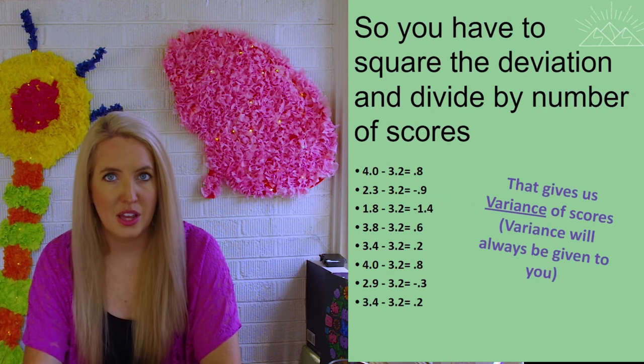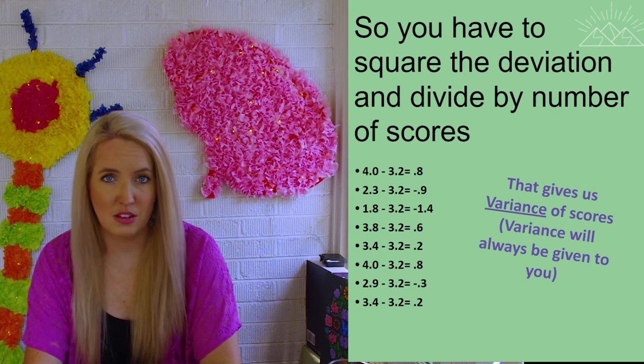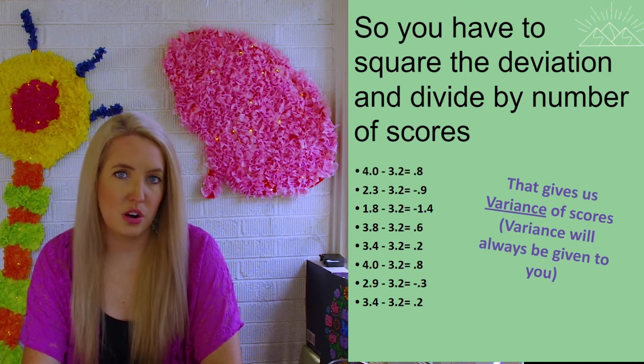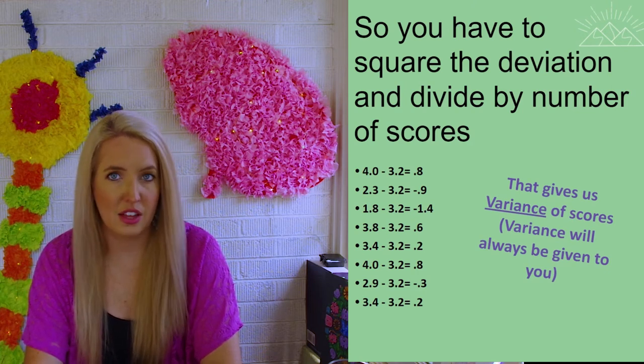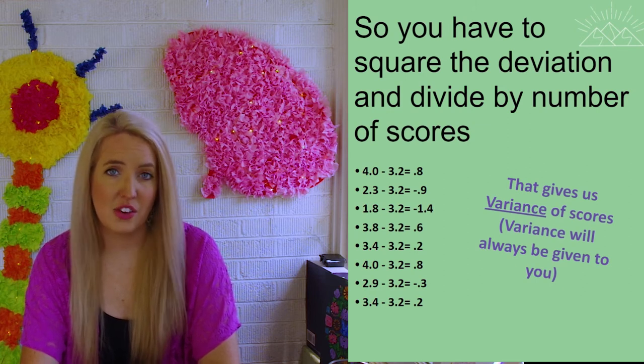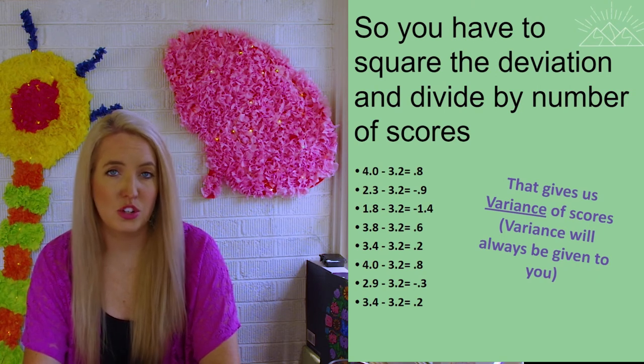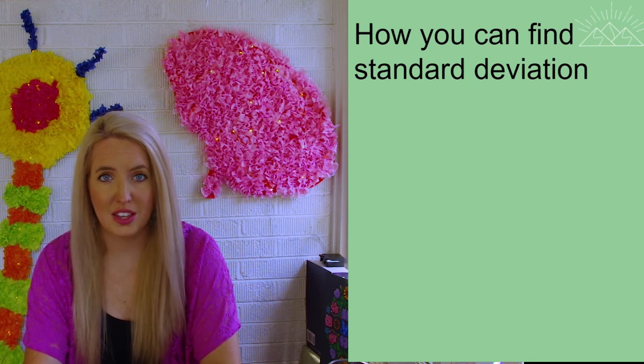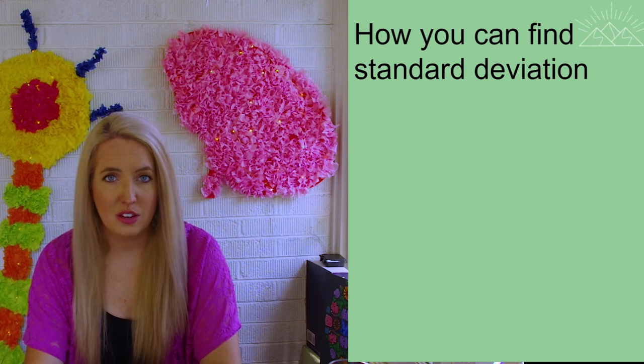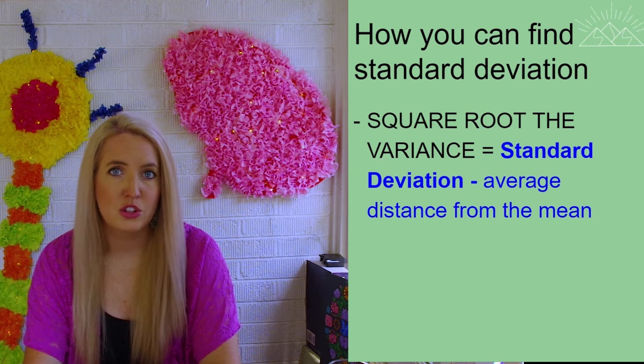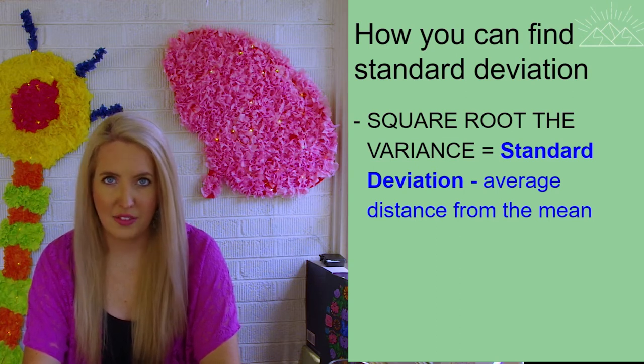Instead, what we have to do is we have to square the deviation and then divide by the number of scores. And this is going to give us a score that's known as the variance. Now in psychology, the variance will always be given to you. What you will be expected to do with the variance is find what's known as the standard deviation, which is the average difference between each score. The standard deviation, the way that you find that is to square root the variance.